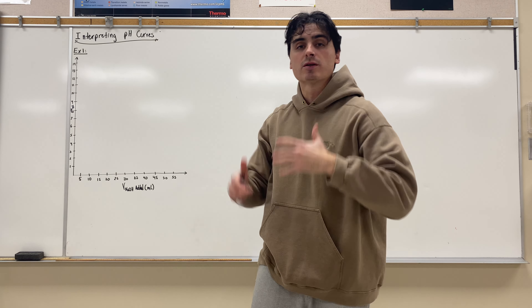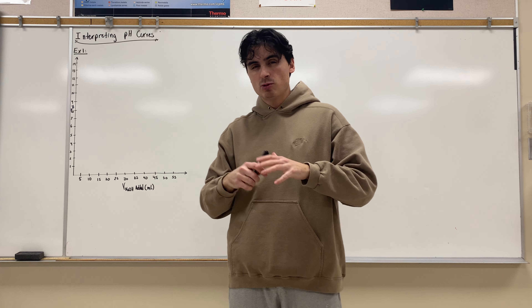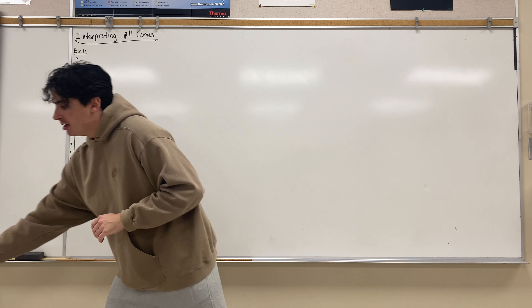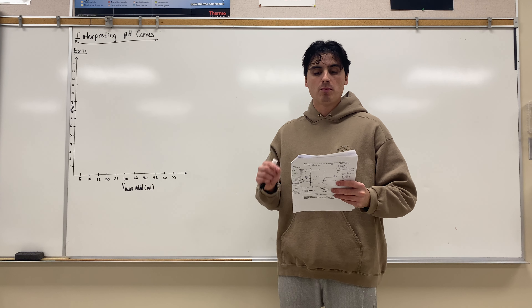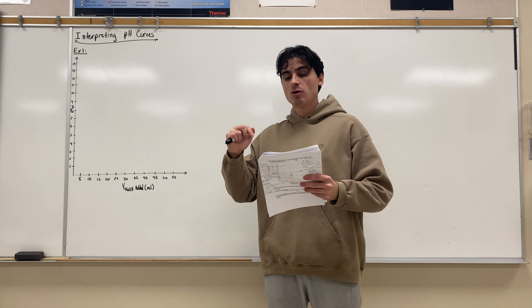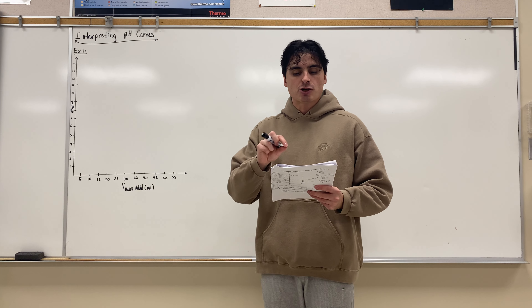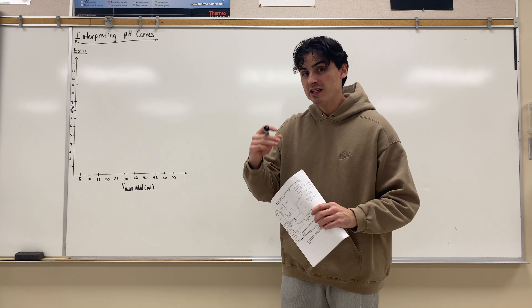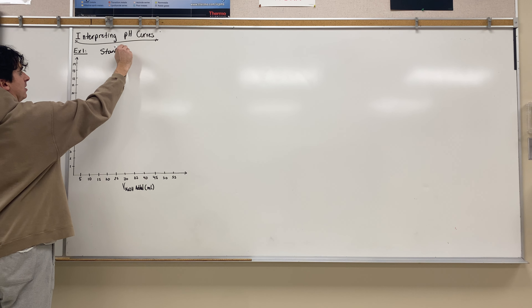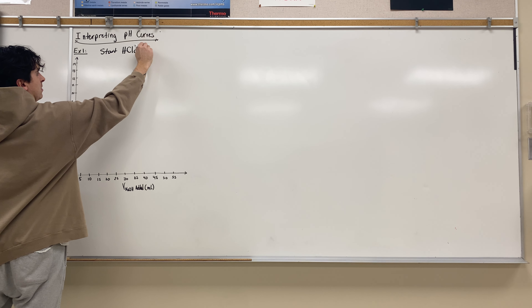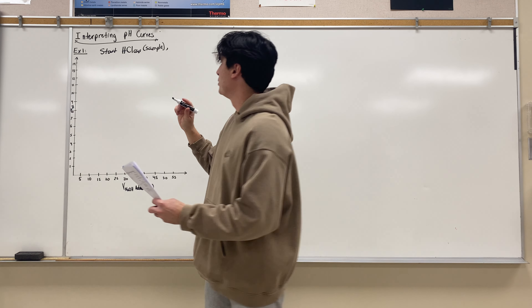We're going to be looking at interpreting pH curves, example one. In this situation, we are titrating 25 milliliters of 0.10 mole per liter HCl with 0.10 mole per liter NaOH. Focus on the language: titration of HCl means we start with HCl — that is our sample. And it says 'with NaOH,' which means we are adding NaOH.